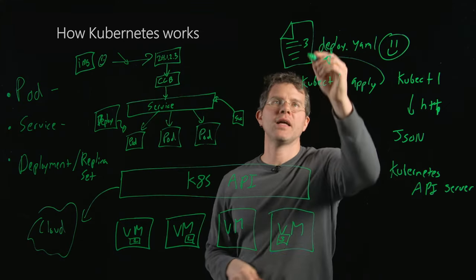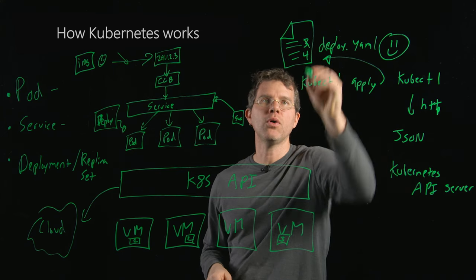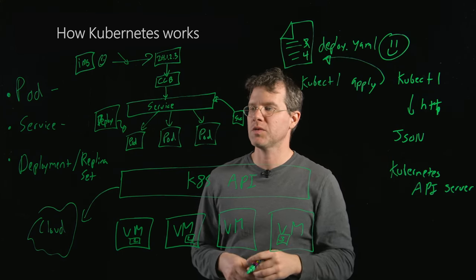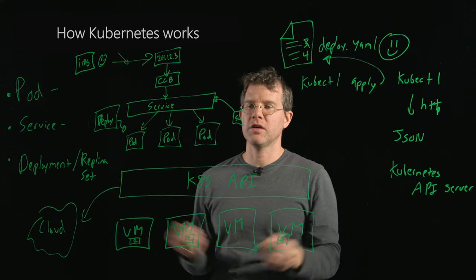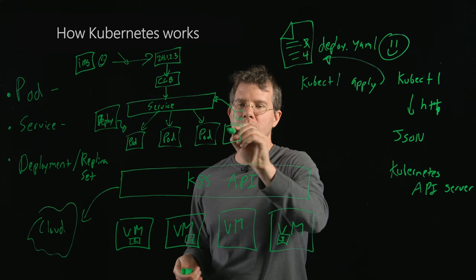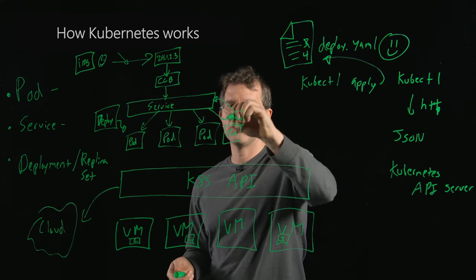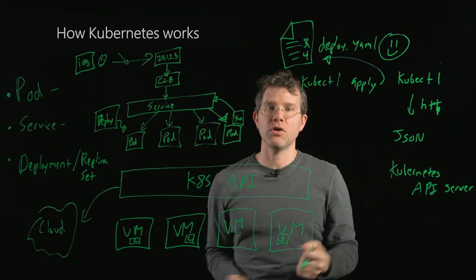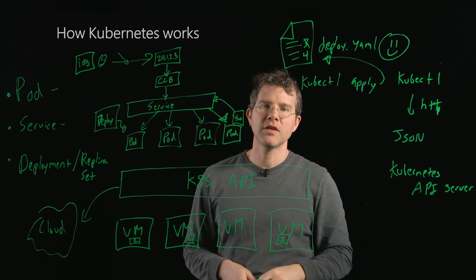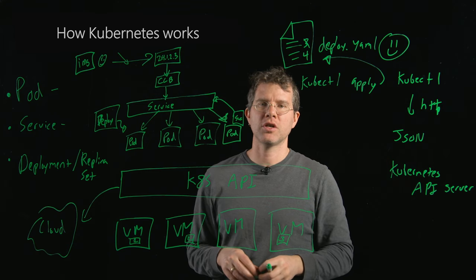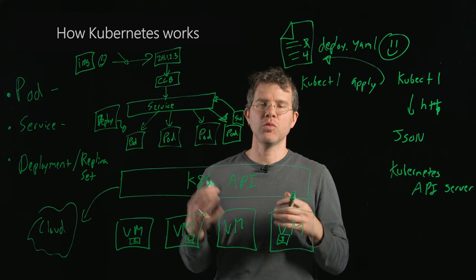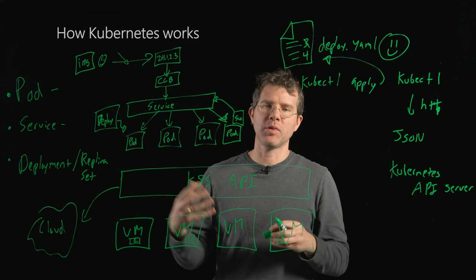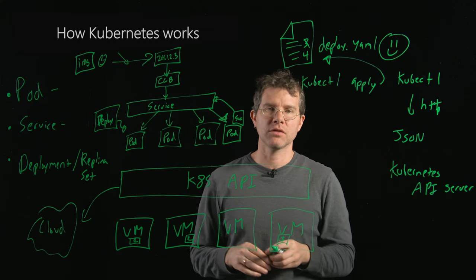If I go to the deployment and change the replica count from, say, three to four, the declarative and self-healing nature of Kubernetes will say: you only have three replicas here, I need a fourth. Traffic flows from the load balancer out to this fourth replica, and my end user doesn't even notice that I've scaled up the application. That gives you a really good illustration of why Kubernetes is great for deploying reliable, scalable applications without affecting end users.